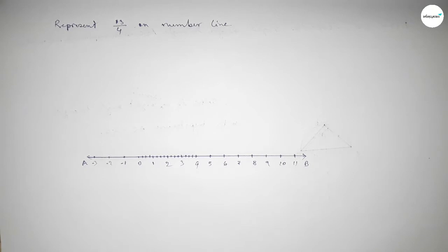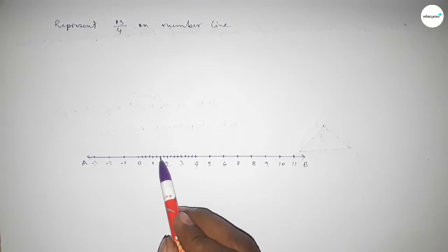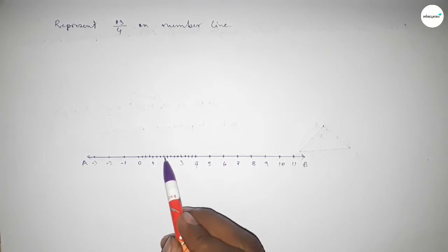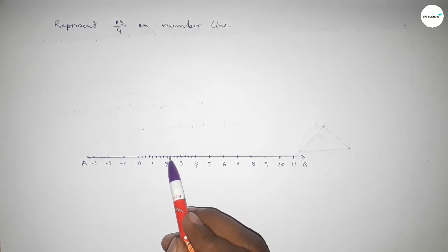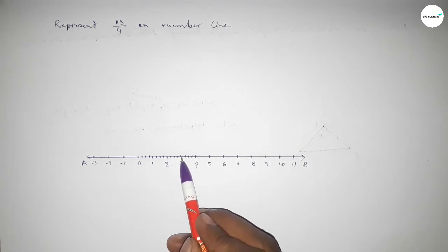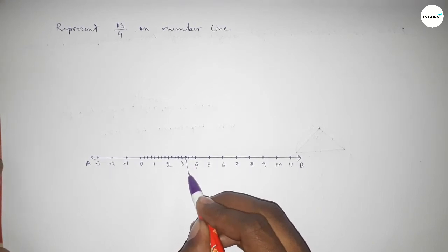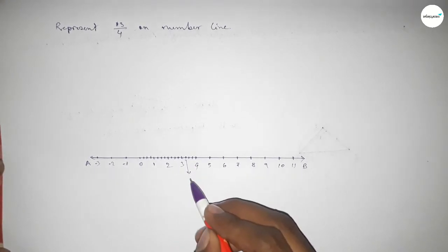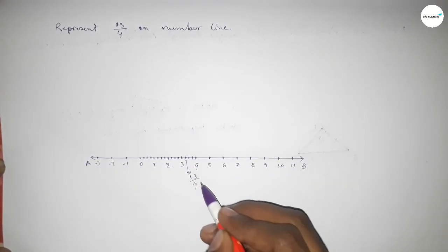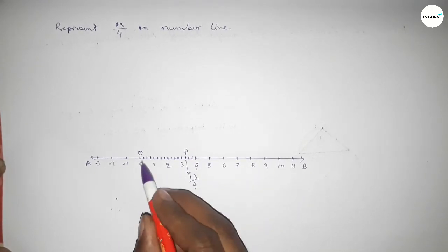This is one over four, two over four, three over four, four over four, five over four, six over four, seven over four, eight over four, nine over four, ten over four, eleven over four, twelve over four — this is thirteen over four. So this is thirteen over four on the number line. This is O and P, therefore OP equals thirteen over four units.